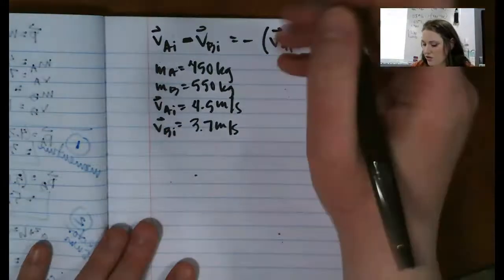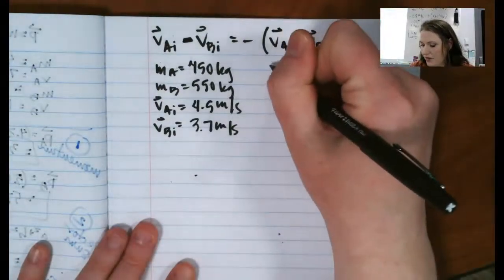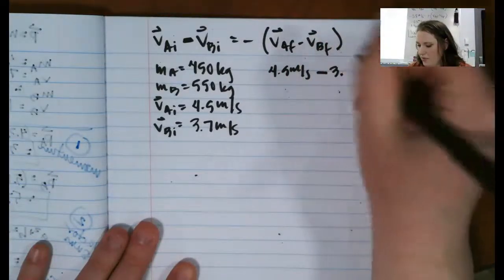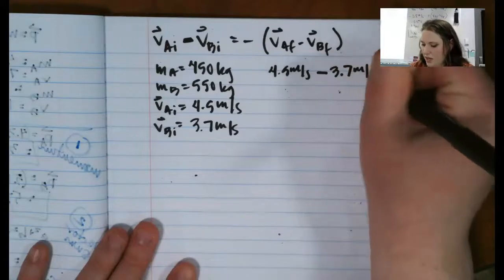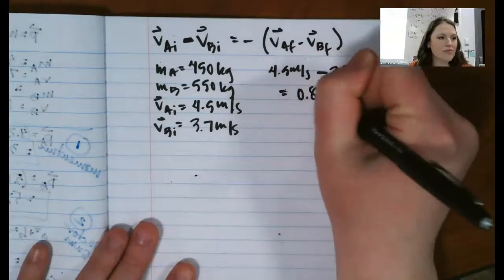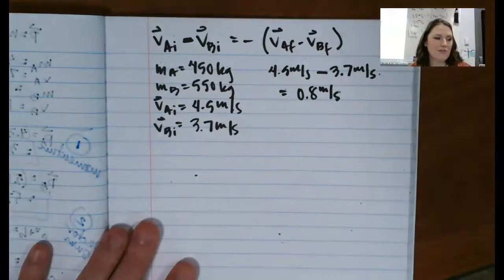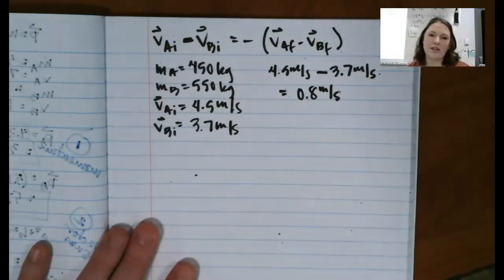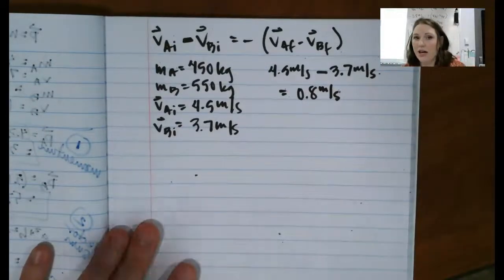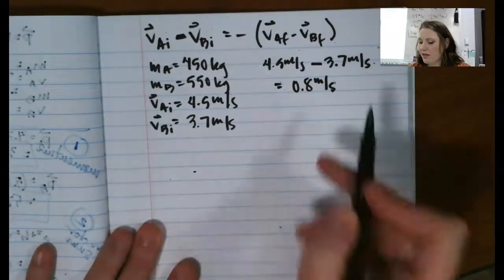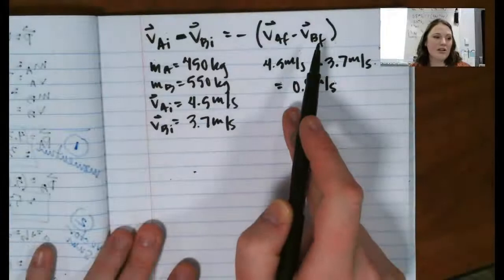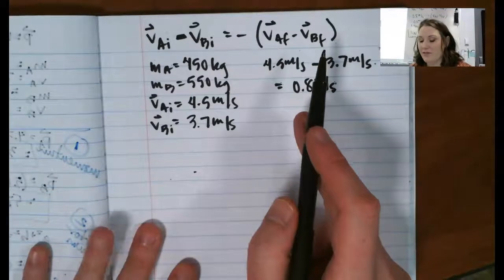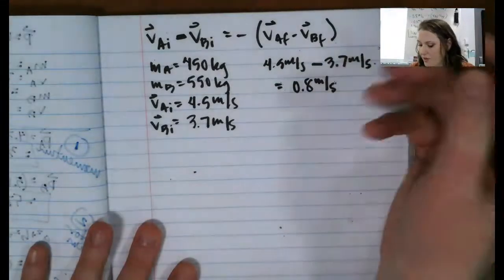So I know what my initial velocity A is, that's 4.5 meters per second, minus my initial velocity for B, 3.7 meters per second. So that's 0.8 meters per second, is that difference between them. So I can do a little bit of algebra here, and with the solution guide, if you look up that to go along with you, they solve for final velocity B first, mostly just so that they can solve for final velocity A first. It sounds like a contradiction in terms, but you'll see what I'm talking about.